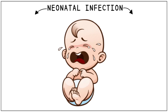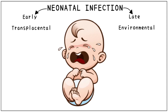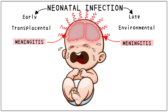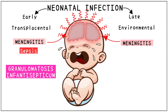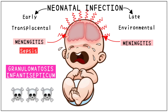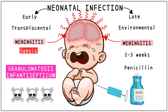Listeria causes neonatal infection which can be of two different types: early and late. Early infection is transmitted vertically — that is, from the mother to the fetus. It can be transplacental or transmitted during delivery by contact with genital flora. Late infection is hospital acquired or environment acquired. Both types are characterized by meningitis; however, early infection is accompanied by sepsis. This condition is called granulomatosis infantisepticum and is very often fatal. Late infection usually occurs two to three weeks after birth and is easily treated with penicillin.